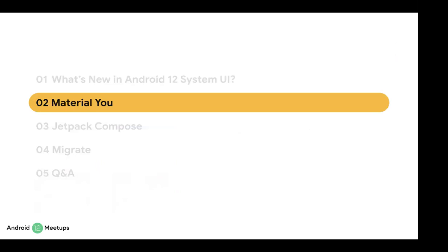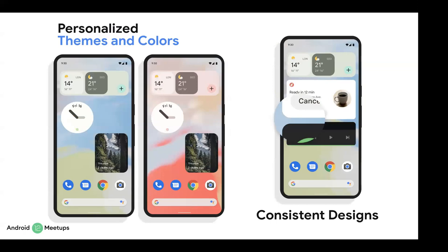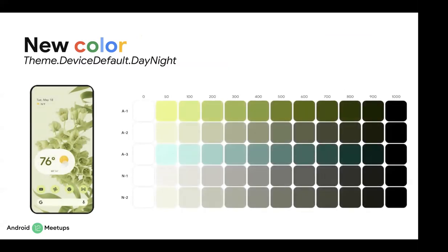Another great UI enhancement in Android 12 is Material You, which is the focus of today's topic. Material You is a set of design system updates that enables more beautiful, personalized UI expression. It enables color theming capabilities to easily personalize device colors and themes by generating a full range of color palettes created based on the user's wallpaper using a color extraction algorithm.